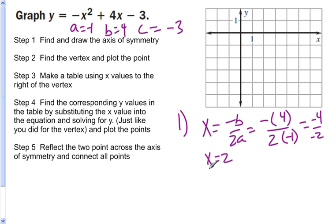How do you graph the line x equals 2? That's a vertical line, and it goes through 2 on the x axis. So here's my vertical line. This is the axis of symmetry. It divides our parabola in half.